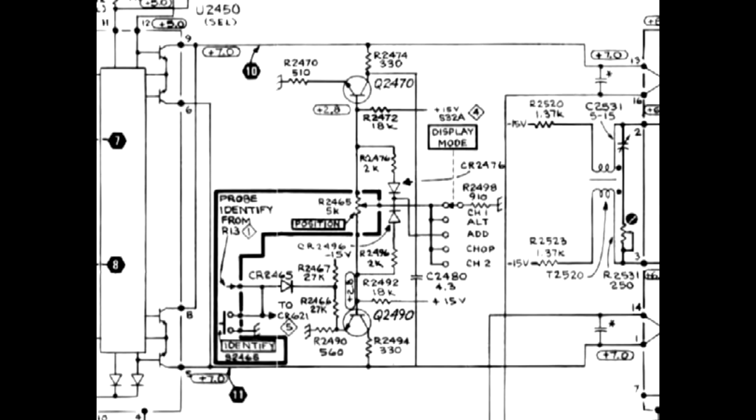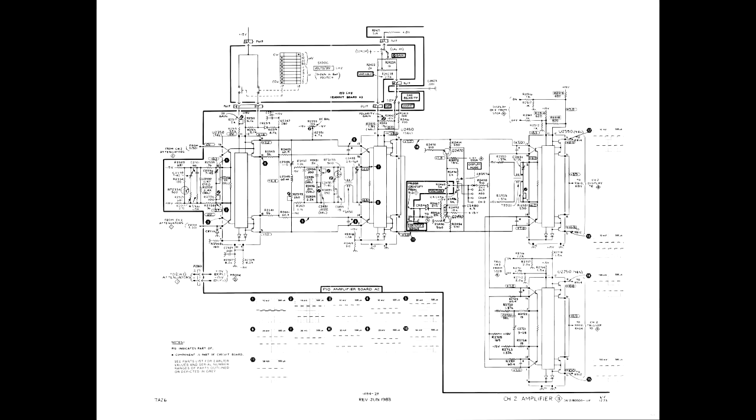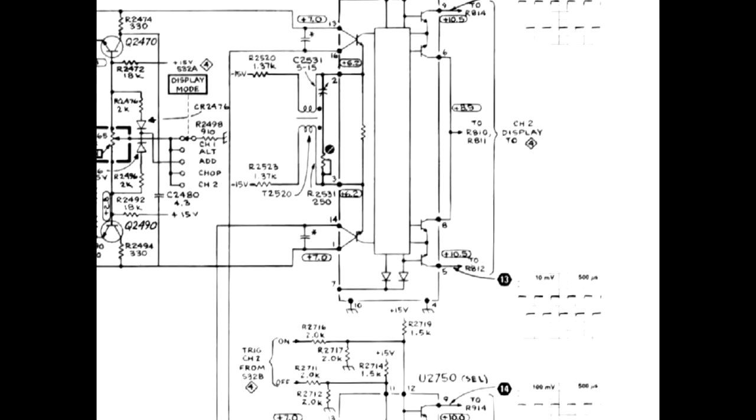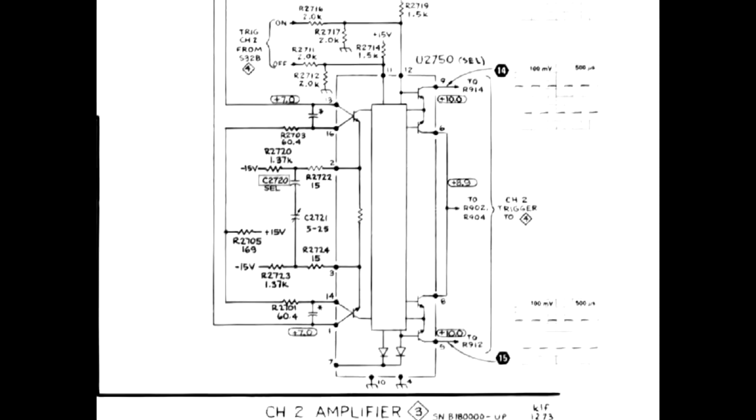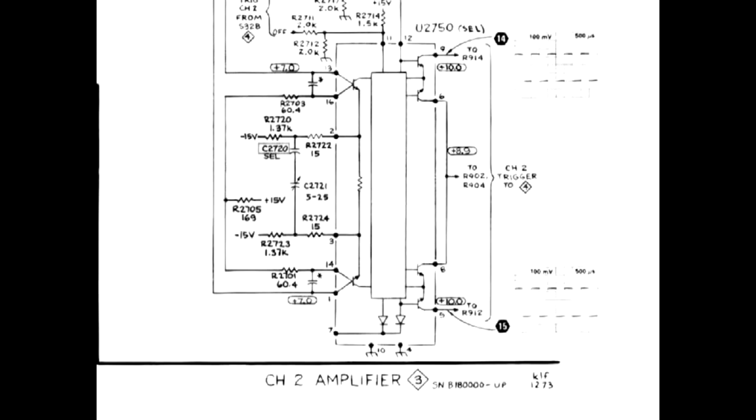At first I could not see the source of the pull-up current for the output of Q2450. It comes through U2750 and U2550 and is ultimately supplied by R2703, R2701, and R2705.